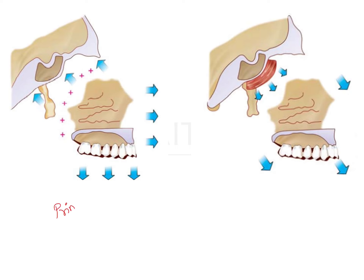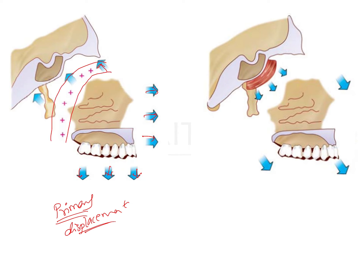Here is an example of primary displacement. The nasomaxillary complex is enlarging in all directions, because of which it is moving away from the cranial base. Bone is being laid down at the posterior aspect of the nasomaxillary complex, pushing it in the downward and forward direction. So here the maxilla is moving because of its own growth.